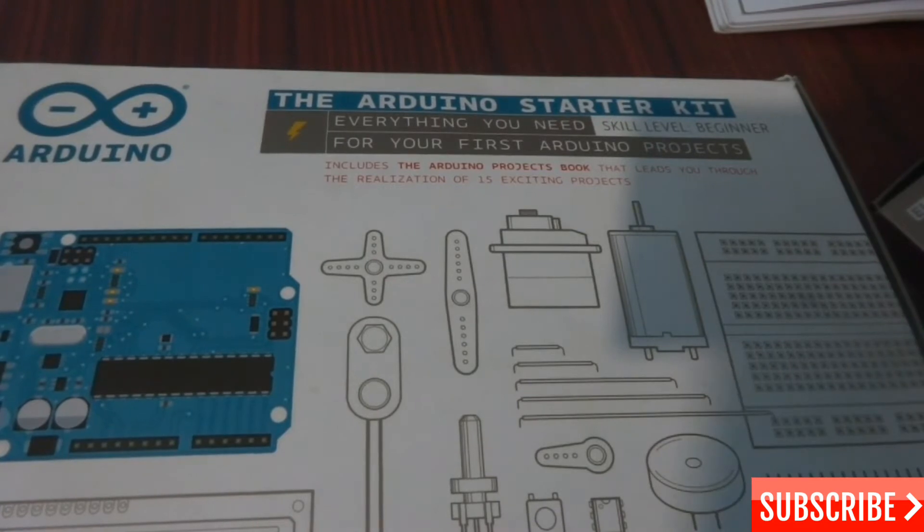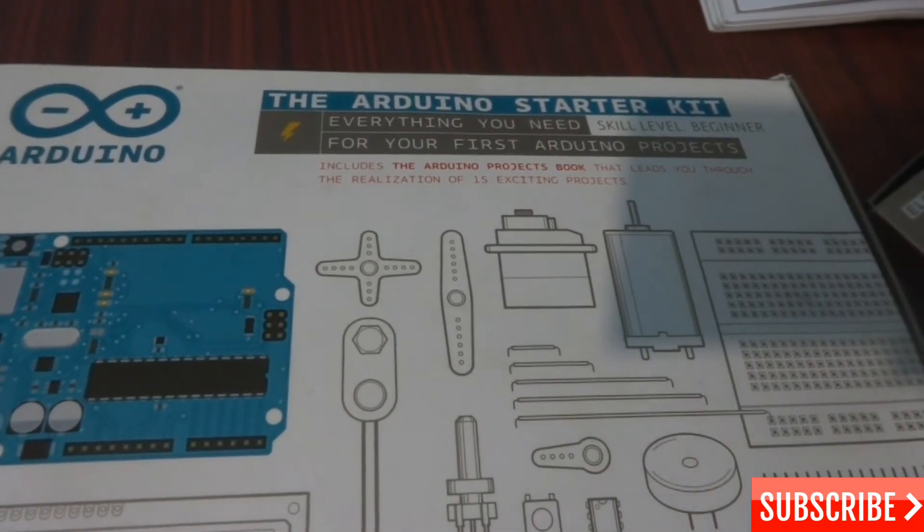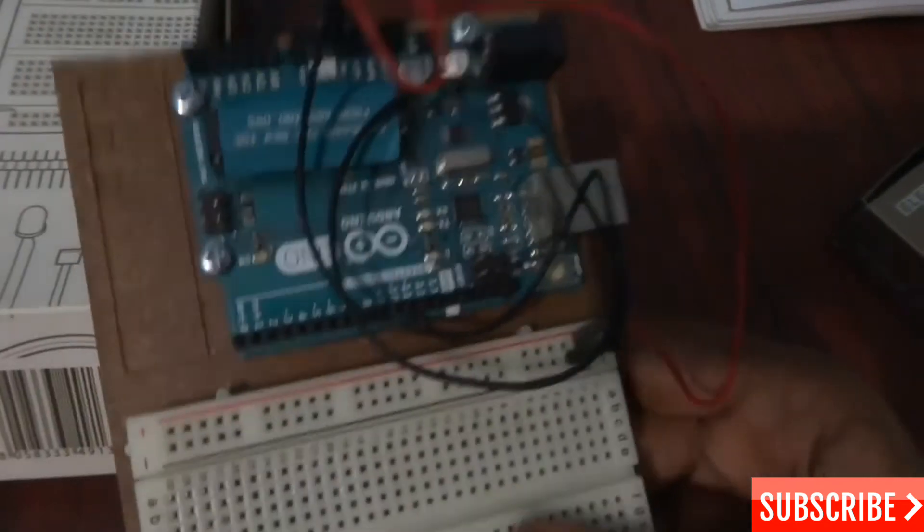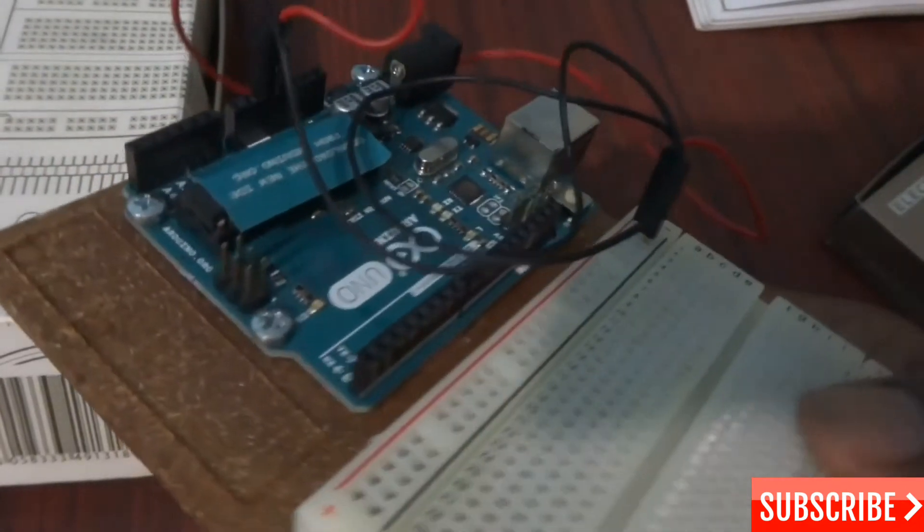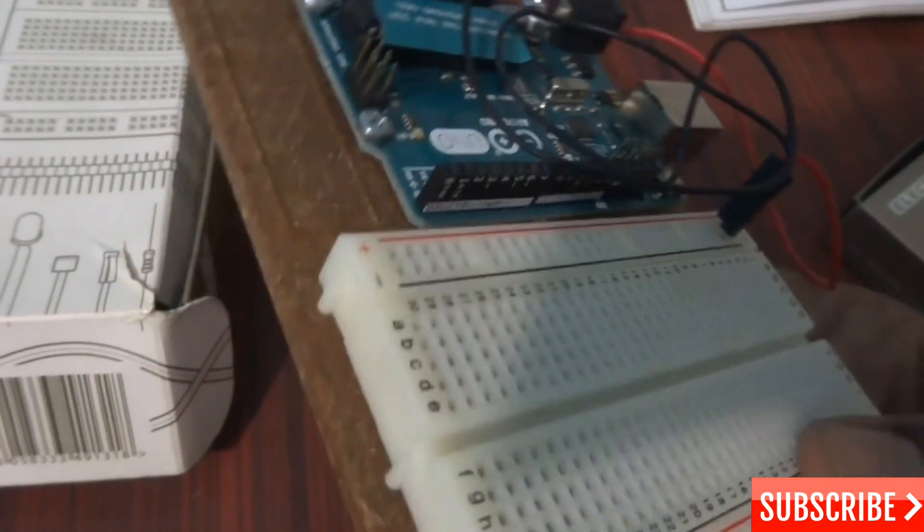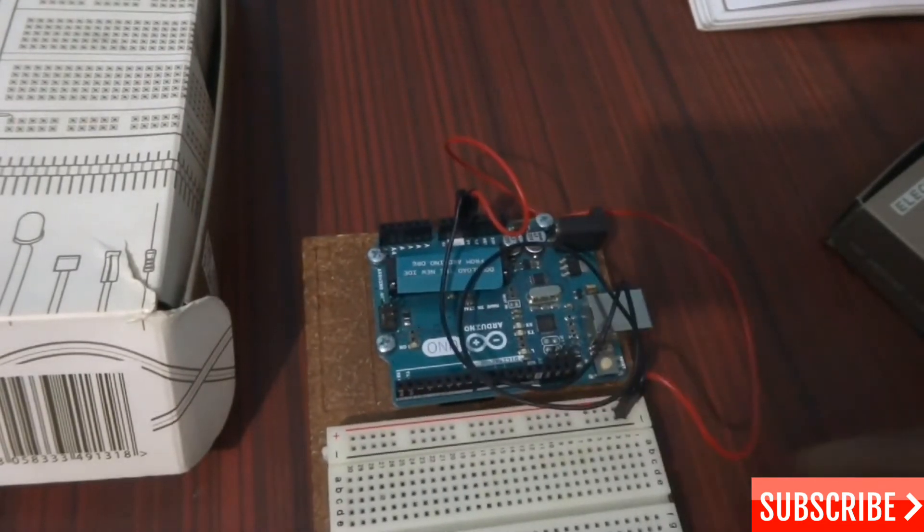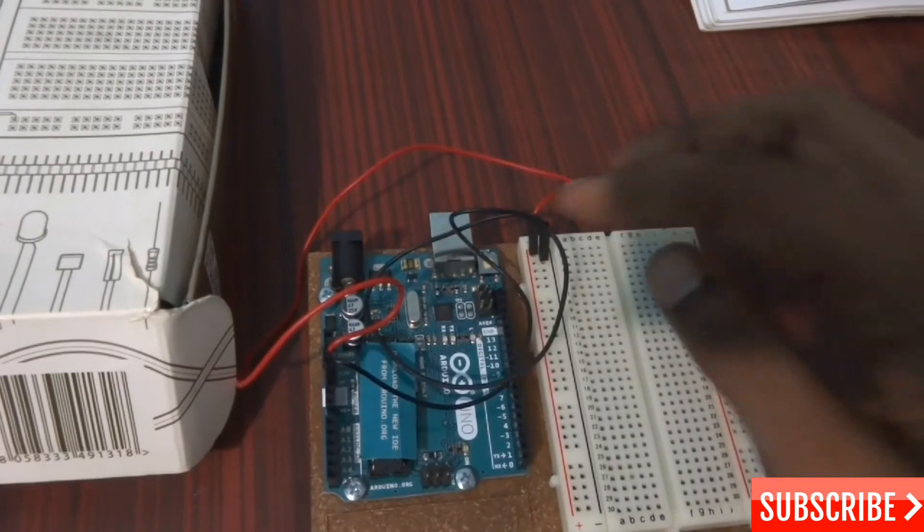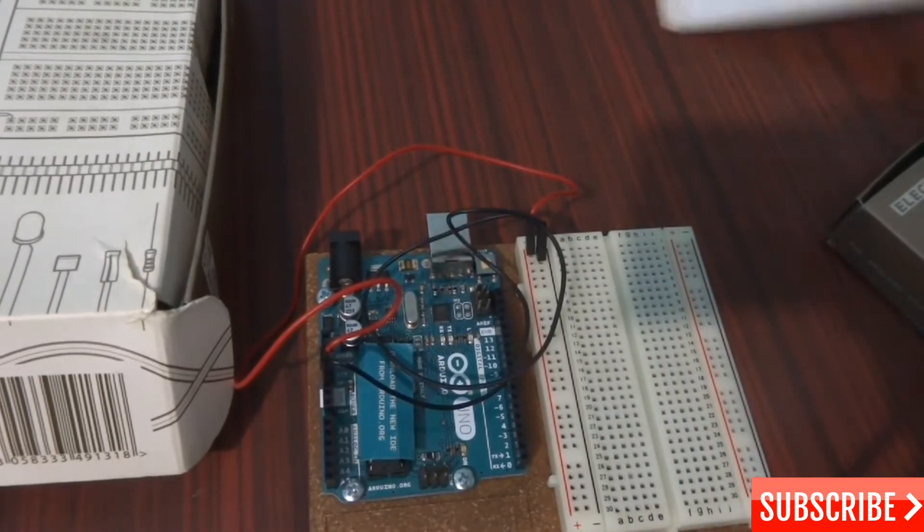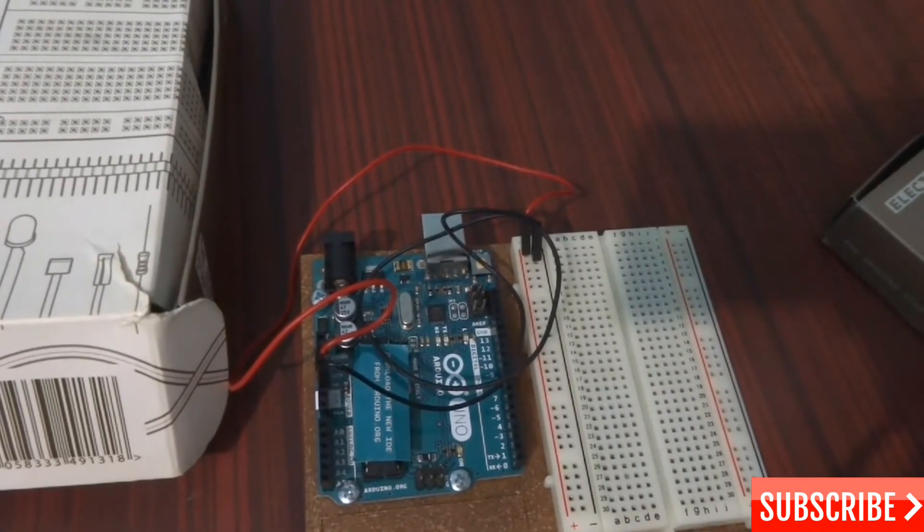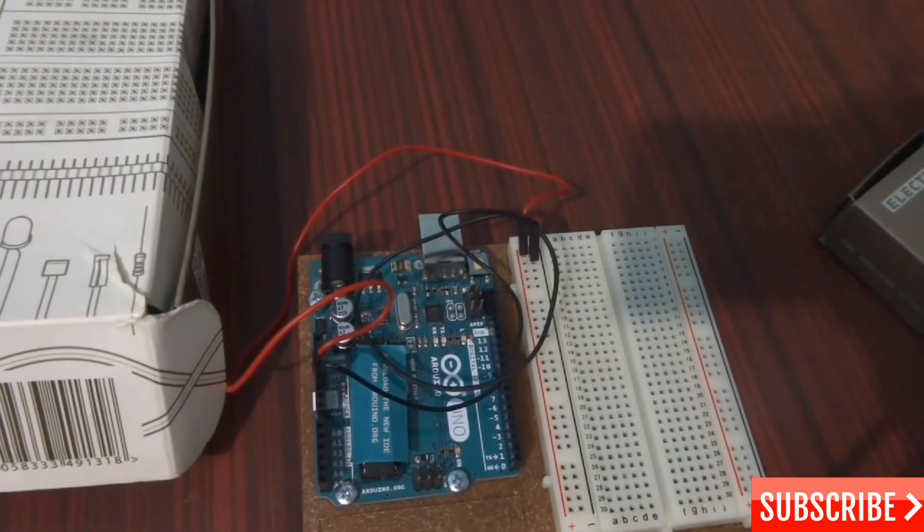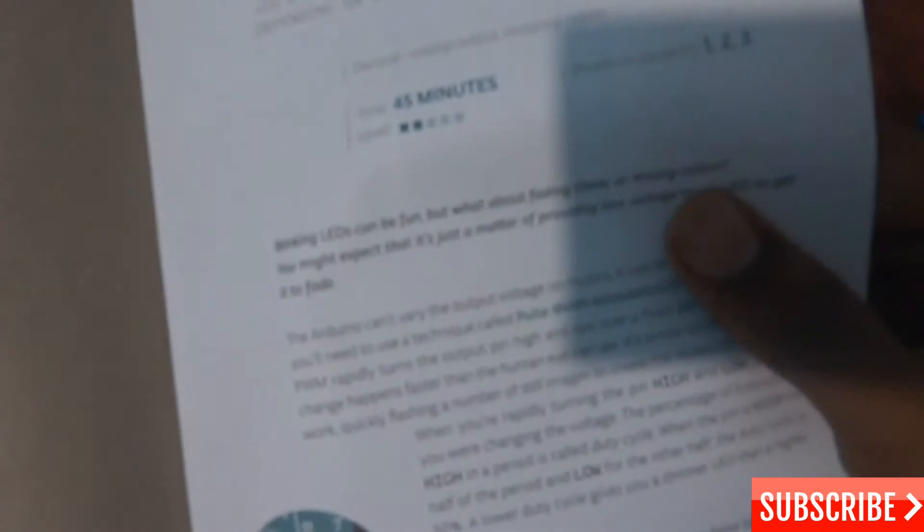In the Arduino beginners kit you can do many projects, and this is the Arduino itself. This is a microcontroller which you can control robots, control different sensors, and use for many projects. Today I'm going to make a color mixing lamp which will change color according to the light photoresistors we are going to use.